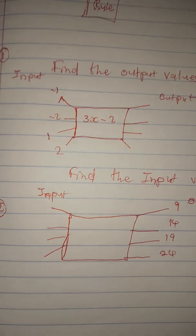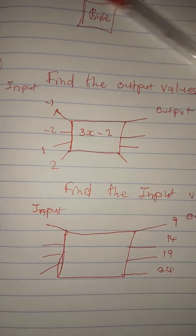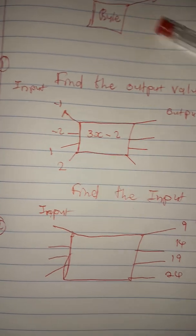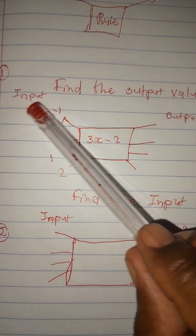When you're in grade 8, you need to know what we call a flow diagram. Today we are going to work with input values and output values when the rule is known — that's what we are going to work with.